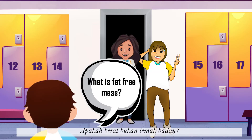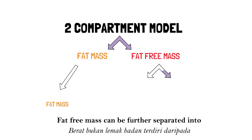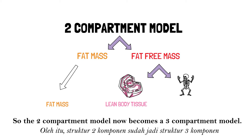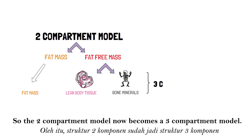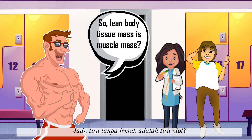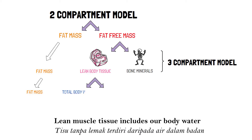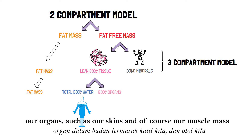What is fat-free mass? Fat-free mass can be further separated into lean body tissue mass and bone minerals, so the two-compartment model now becomes a three-compartment model. Lean body tissue mass — is it muscle mass? Lean muscle tissues include our body water, our organs such as our skin, and of course our muscle mass.